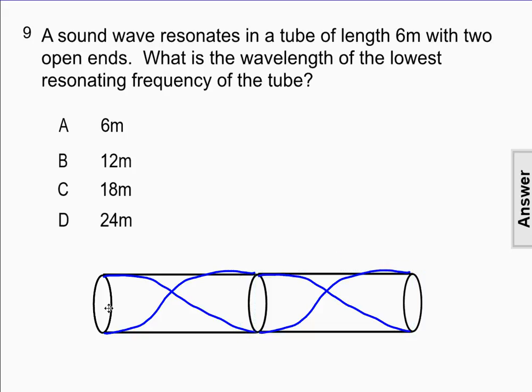If we double the length of the tube, we can see a full wavelength going from this open end here all the way up to this open end here at the other end. So the wavelength of the lowest resonating frequency in this tube is going to be equal to